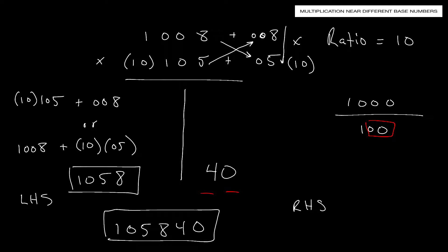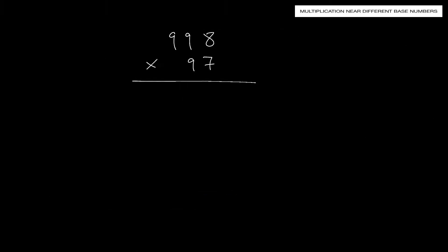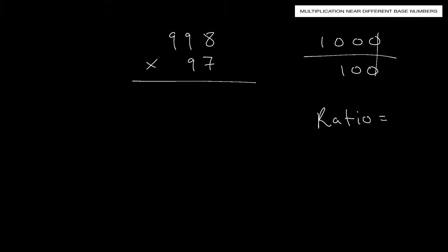Let's work on the next problem: 998 times 97, using multiplication near numbers below a base. 998 is very close to base 1,000, and 97 is very close to base 100. Setting up the ratio by canceling zeros gives us a ratio of 10.